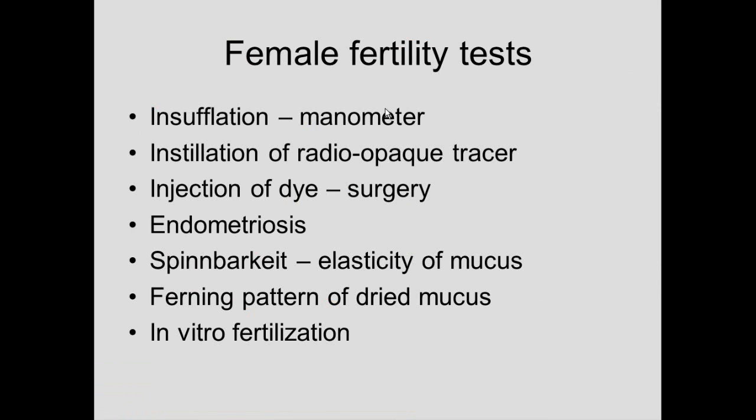One test we'll be using today is insufflation. You use a manometer to measure the pressure inside the female reproductive tract. If there's a lot of pressure, there is an impedance of flow through the fallopian tube.